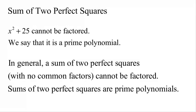Now we're going to look at cubes — sums and differences of cubes. What are perfect cubes? 1 cubed is 1, 2 cubed is 8, 3 cubed is 27, 4 cubed is 64, 5 cubed is 125. It's nice to have a few perfect cubes in mind.